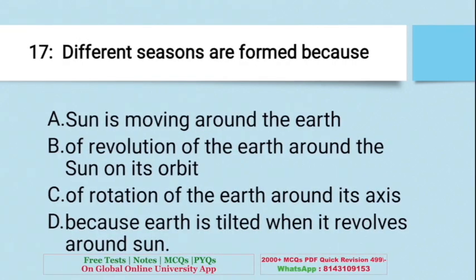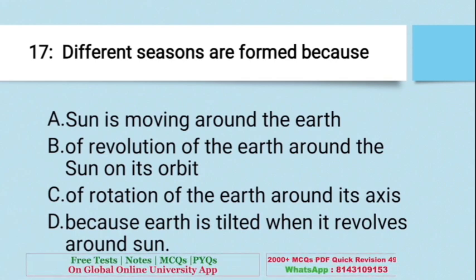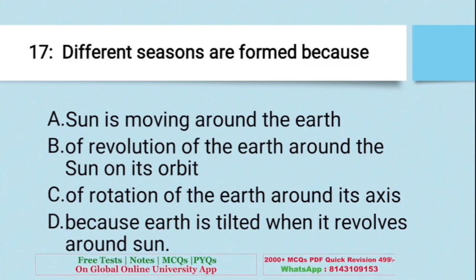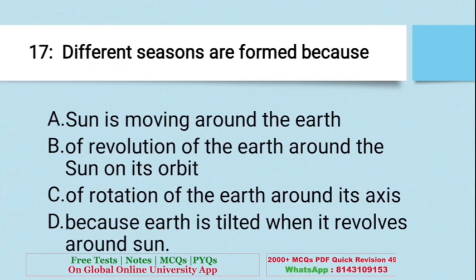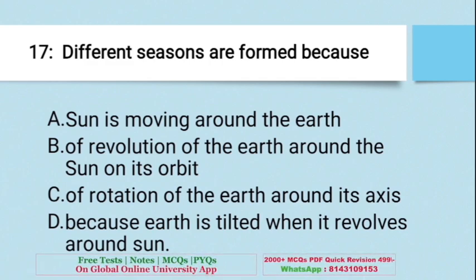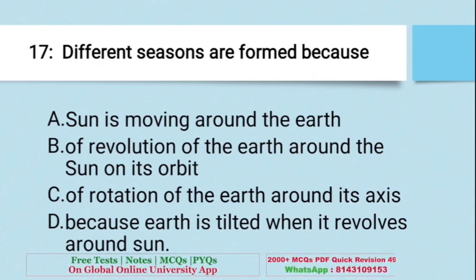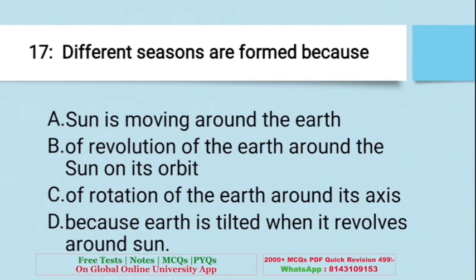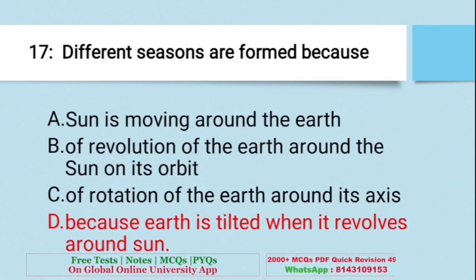Question: Different seasons are formed because — A. The sun is moving around the Earth; B. Because of revolution of the Earth around the sun on its orbit; C. Because of rotation of the Earth around its axis; D. Because the Earth is tilted when it revolves around the sun. The right answer is D — the Earth is tilted, and it revolves around the sun, which is why seasons are formed.